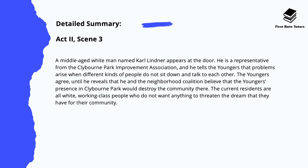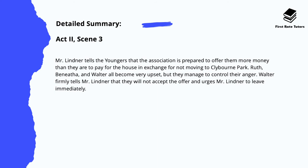A middle-aged white man named Carl Lindner appears at the door. He's a representative from the Clybourne Park Improvement Association, and he tells the Younger family that problems arise when different kinds of people do not sit down and talk to each other. The Youngers agree, and he reveals that he and the neighbourhood coalition believe that their presence in Clybourne Park would destroy the community there. The current residents are all white working-class people who don't want anything to threaten their dream for their community, which is to stay segregated and separate from African Americans.